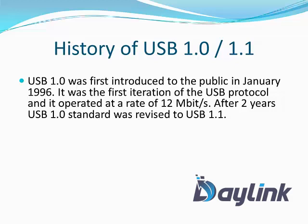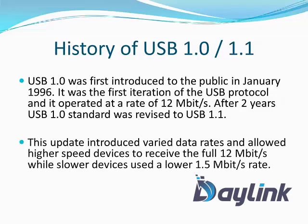After two years, the USB 1.0 standard was revised to USB 1.1. This update introduced varied data rates and allowed high-speed devices to receive the full 12 megabits per second, while slower devices used a lower rate of 1.5 megabits per second.